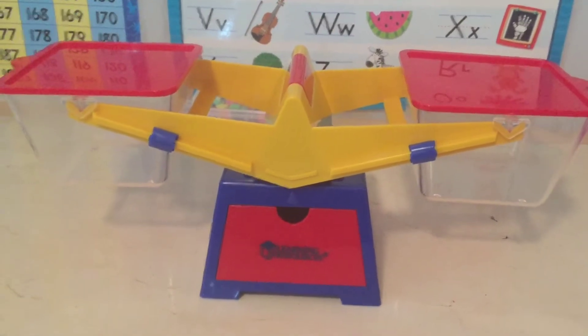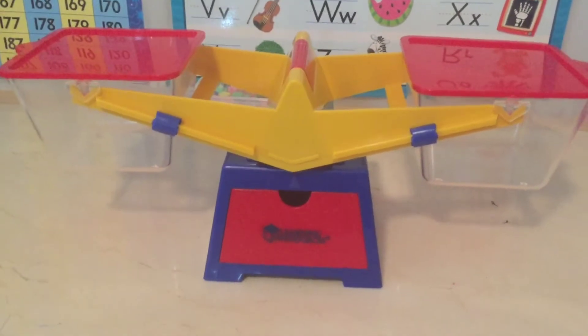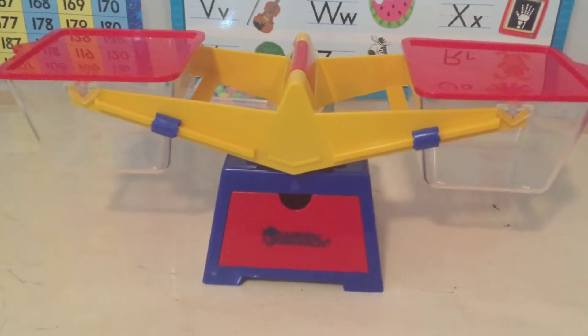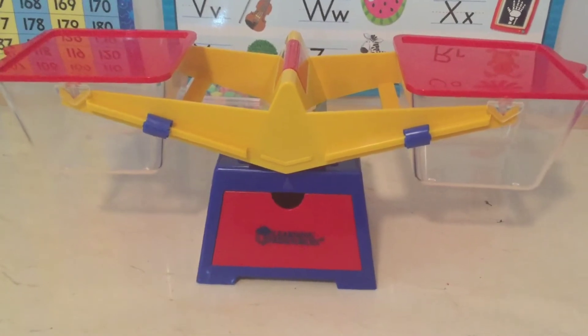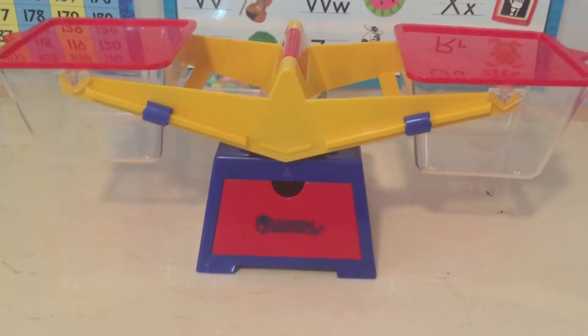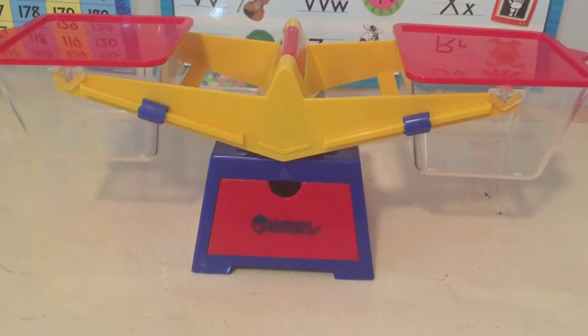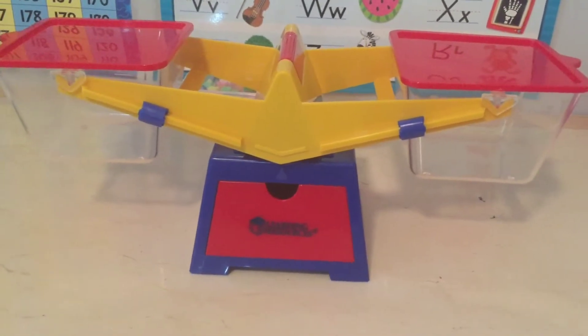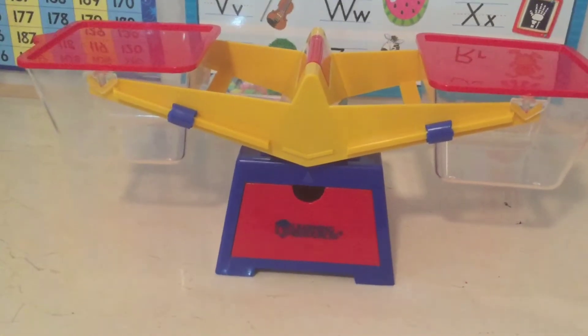It comes with everything you need to teach Saxon Math 1 with the exception I believe of dominoes. There's some household items that it asks you to use and those are things pretty much everyone has on hand. The only additional thing was dominoes and I didn't get the domino package just because it was a little more than what I wanted to spend. I decided I would just find them in the house someplace.